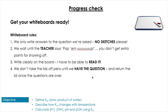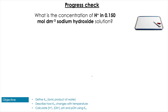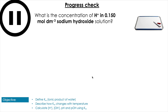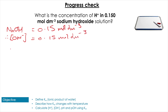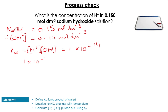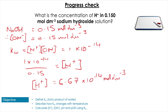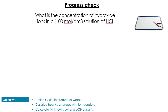Let's test you. Find [H⁺] in a 0.15 mol dm⁻³ solution of sodium hydroxide — pause the video. NaOH has one OH⁻ group, so [OH⁻] = 0.15 mol dm⁻³. Using Kw: [H⁺] = 1 × 10⁻¹⁴ / 0.15 = 6.67 × 10⁻¹⁴ mol dm⁻³.